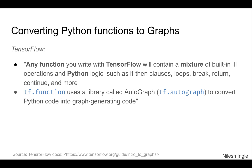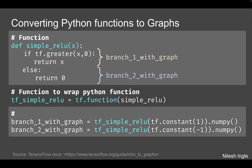Now let's look at how we can create a graph using Python functions and how branches of graphs are created. Here we have a function simple_relu that uses a Python if statement: if tf.greater — if x is greater than zero, we return x; otherwise the function returns zero. We convert this function to a graph by passing it to tf.function, and the output graph is stored in tf_simple_relu.